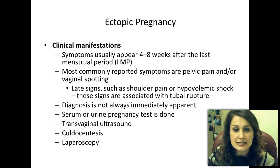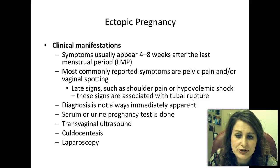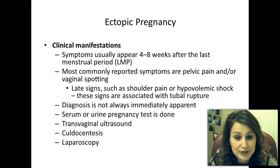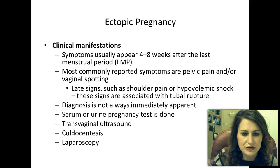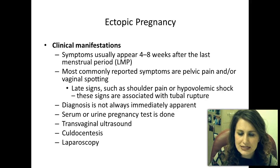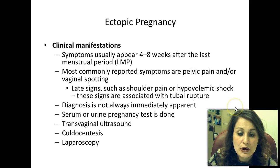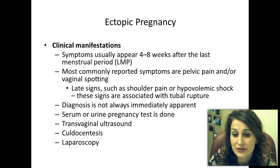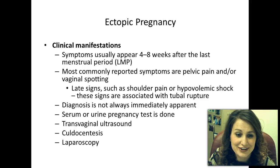Clinical manifestations: symptoms usually appear between four to eight weeks after the last menstrual period. Most commonly reported symptoms are pelvic pain and/or vaginal spotting. Late signs include shoulder pain or referred pain—pain perceived at a location different from the actual site—meaning the patient feels pain in the shoulder even though the problem is in the fallopian tube. The patient could also present with hypovolemic shock, which is associated with tubal rupture, meaning the tube has already ruptured and she is bleeding out—a very serious situation.